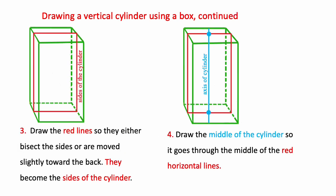Next, draw the red lines so they either bisect the sides of the box going through the middle points or you can move the vertical line back a bit as I did here so the area in front of the box is slightly larger than the area in back and that shows depth where parts of the box diminish with distance. These red lines become the sides of the cylinder.